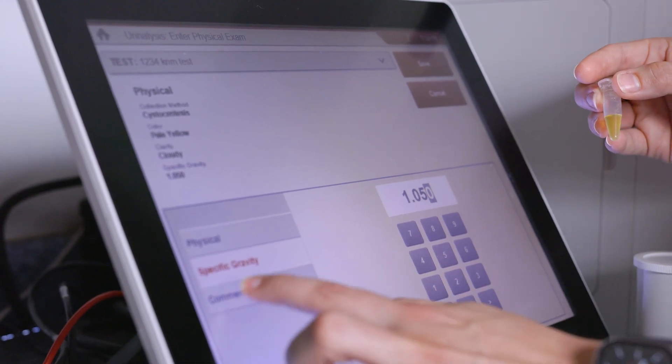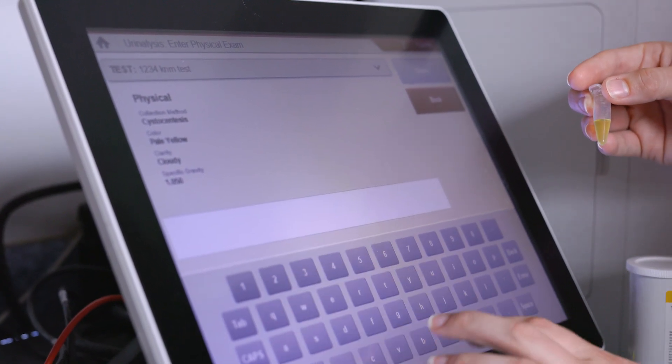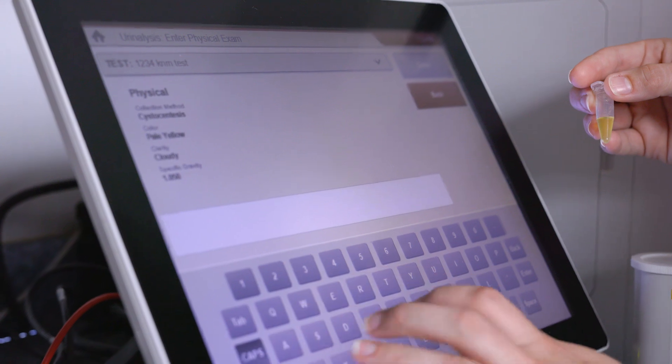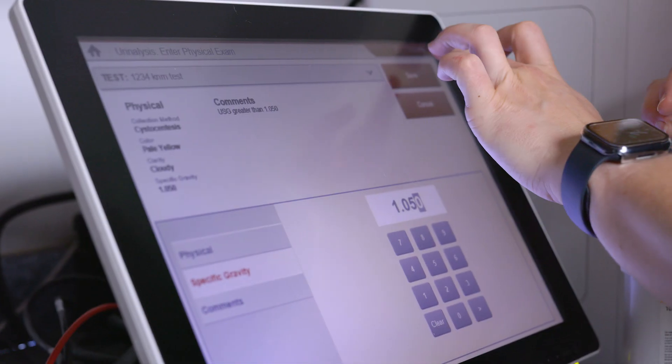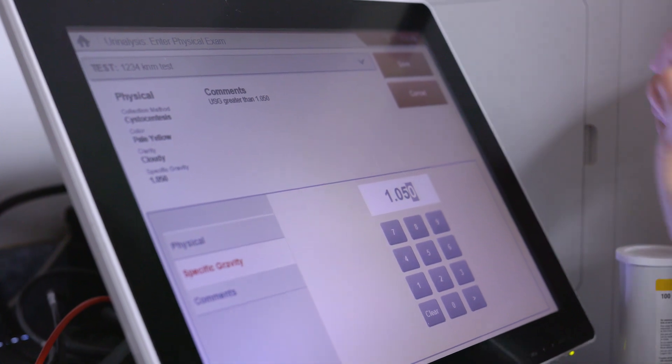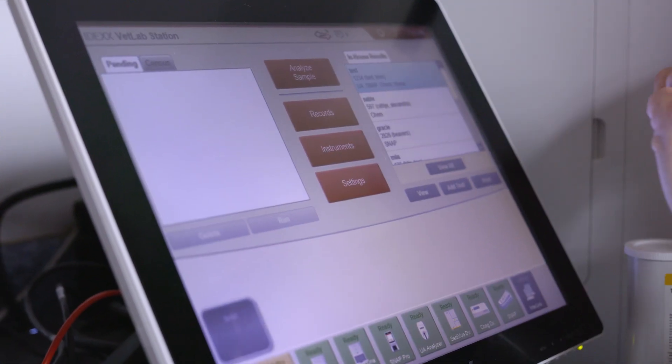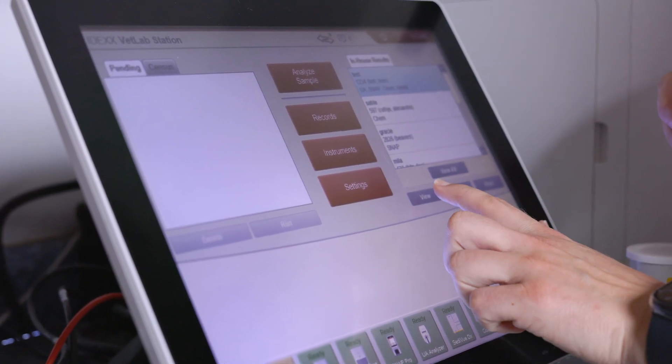However, we want to make sure that we note that the urine specific gravity was greater than 1050. And we'll save that. And that will complete our results for our urinalysis. So now we can view those results.